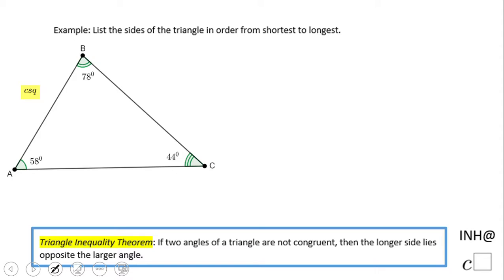Welcome and welcome back. I need help at C-Square. In this example here we want to list the sides of the triangle in order from shortest to longest. And how we're going to do that by looking at these angles and using this triangle inequality theorem which says if two angles of a triangle are not congruent, we notice none of them are congruent, then the longer side lies opposite the larger angle.